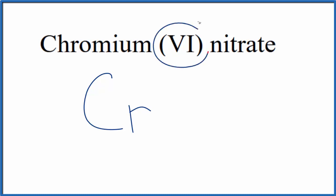Chromium is a transition metal, and this roman numeral 6 here tells us that it's 6+.